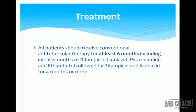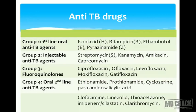All patients should receive conventional antituberculosis therapy for at least six months. The initial two months should include four drugs: rifampicin, isoniazid, pyrazinamide, and ethambutol; the subsequent four or more months should have rifampicin and isoniazid. Drug groups include: Group 1 — oral first-line drugs; Group 2 — injectables, with streptomycin as the first-line and others reserved for multi-drug resistant TB; Group 3 — quinolones such as ciprofloxacin and ofloxacin; Group 4 — oral second-line agents for MDR-TB, including ethionamide, prothionamide, cycloserine, and para-aminosalicylic acid.